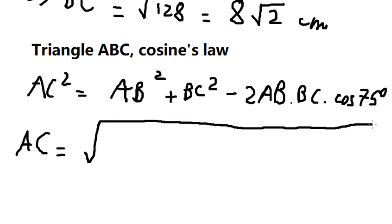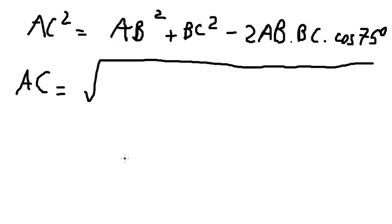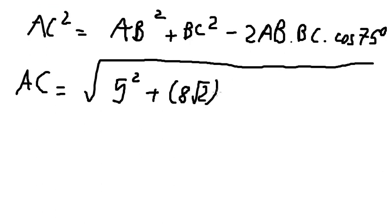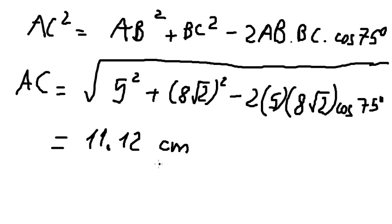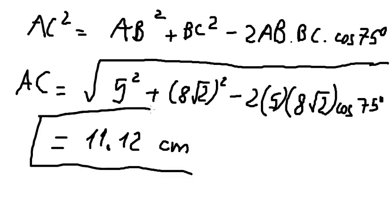Using the cosine law: AC squared equals AB squared plus BC squared minus 2 times AB times BC times cosine of 75 degrees. AB is 5, BC is 8 root 2. We calculate and we have AC equals approximately 11.12 centimeters. This is the final answer. Thank you for watching.